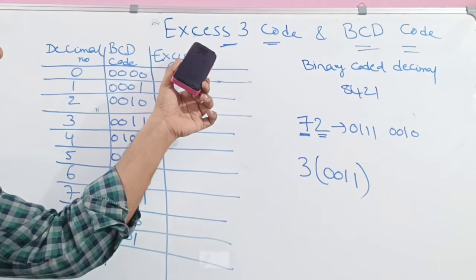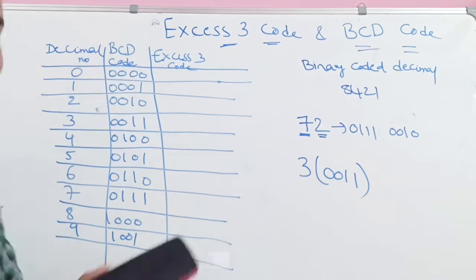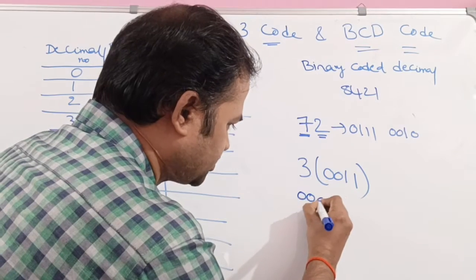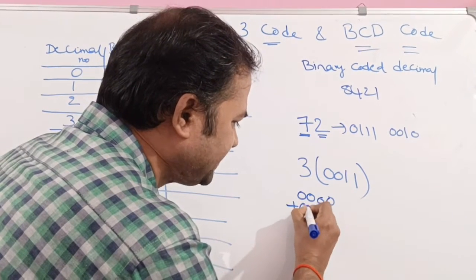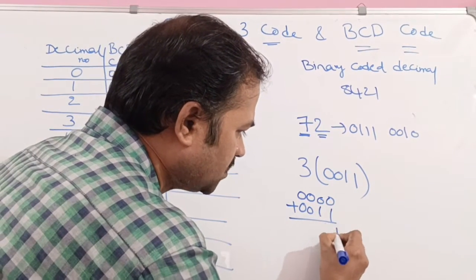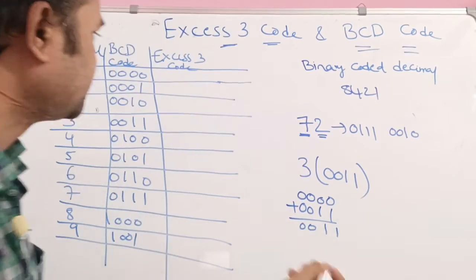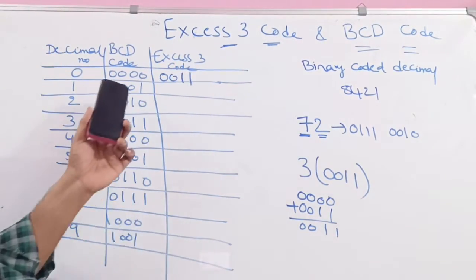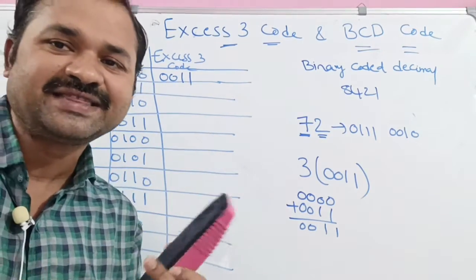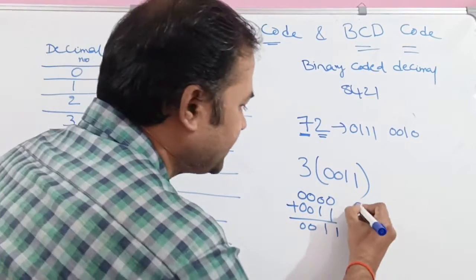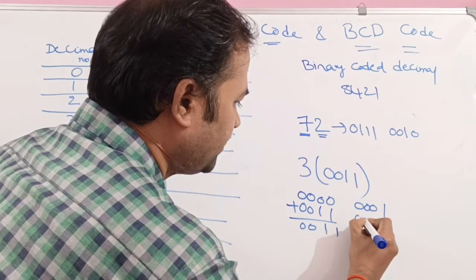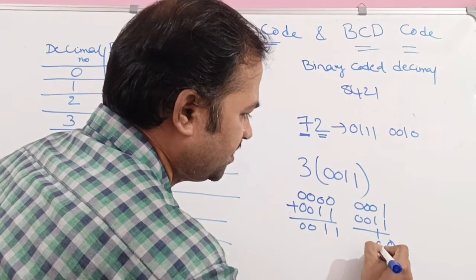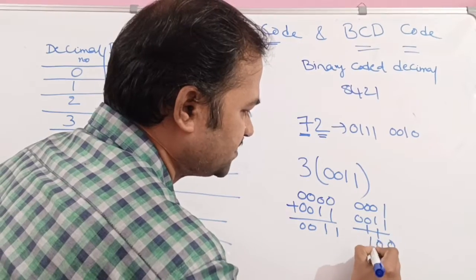Now let us write XS3 code for the corresponding BCD codes. For 0, the BCD notation is 0000. We add 3 to get 0011. For 1, the BCD is 0001, and adding 3 gives 0100, since 1 plus 1 gives 0 with a carry, resulting in 0100.